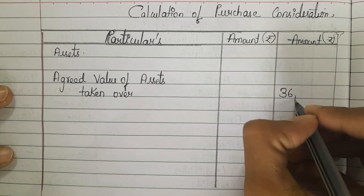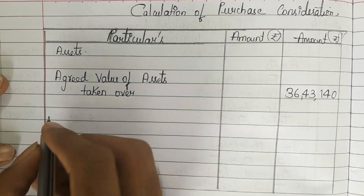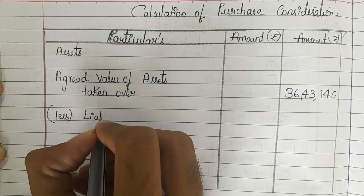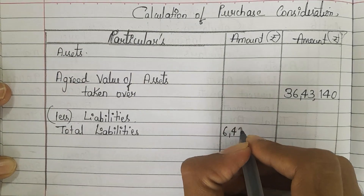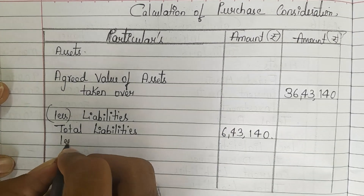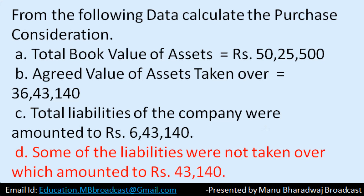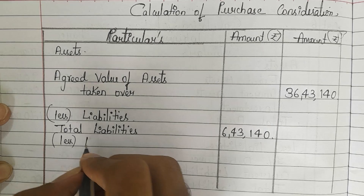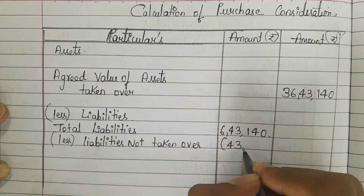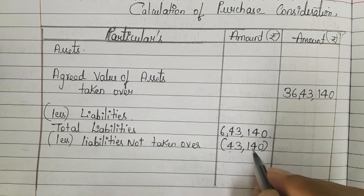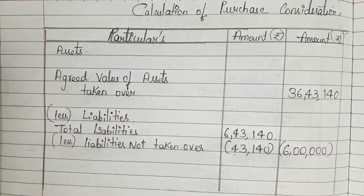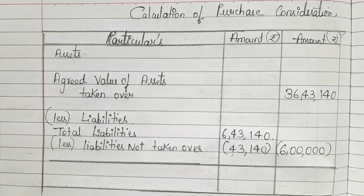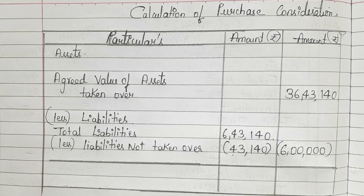You can write 36,43,140 in the outer column. Now we know that from assets we need to reduce liabilities. Total liabilities of the company amounted to rupees 6,43,140. Less: some of the liabilities were not taken over, which amounted to rupees 43,140. So liabilities not taken over: 43,140.